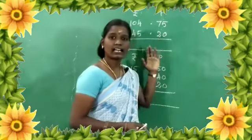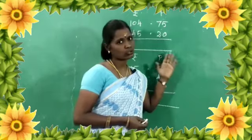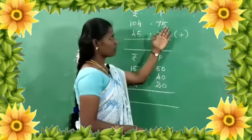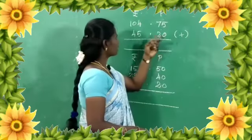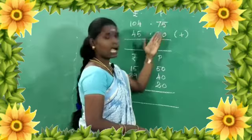If we go to the shop, we will exchange money. If we buy things, we will get a return amount. So we will use addition and subtraction. Now we will see addition first. We will add Rupees and Paisa. For example, 104 Rupees 75 Paisa plus 45 Rupees 20 Paisa.